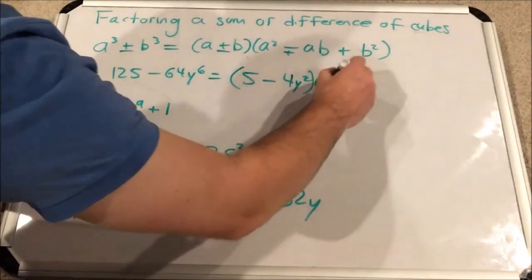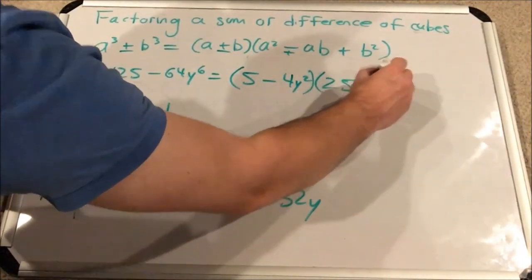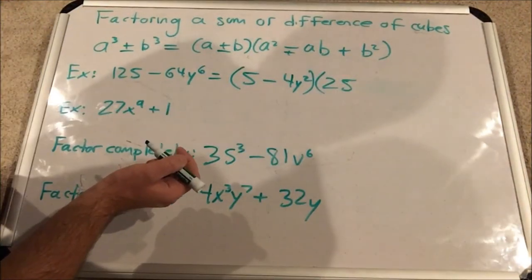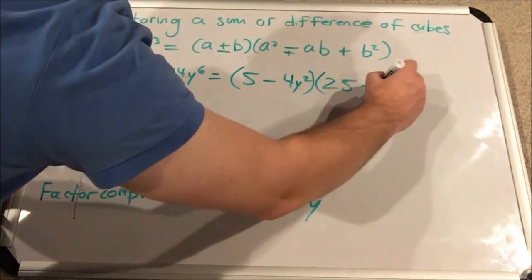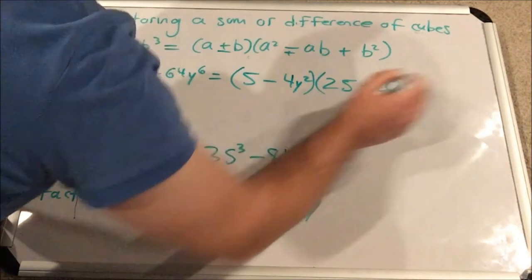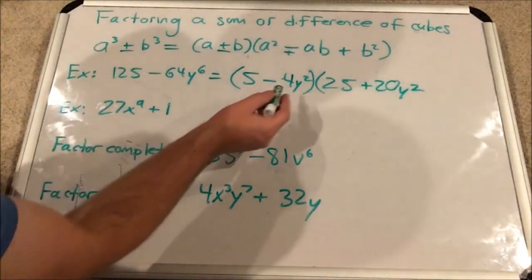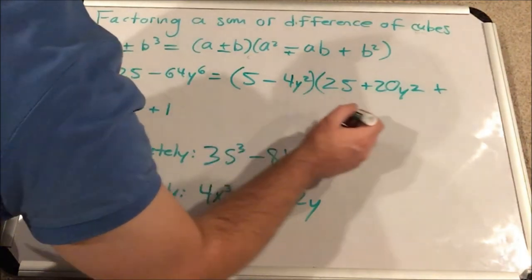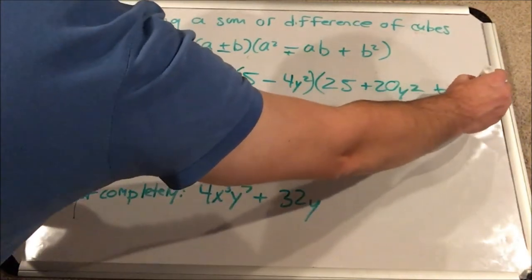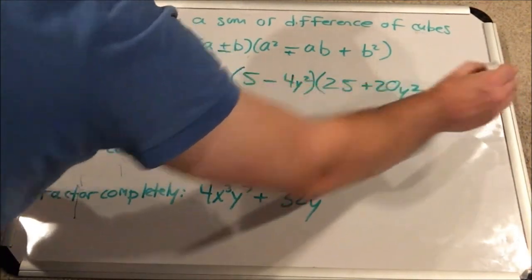So we square this. 25. Opposite sign. Then we multiply these two terms together. You get 20y squared. And then we will square the second term. Always positive. That would be 16y to the 4th. All right.